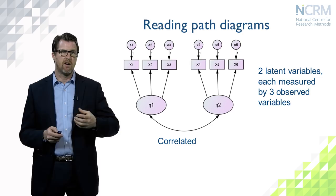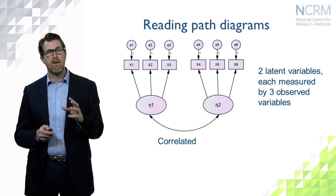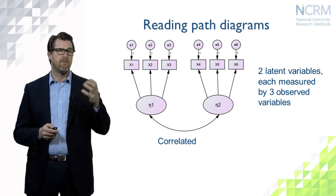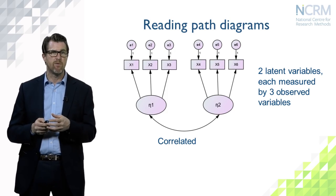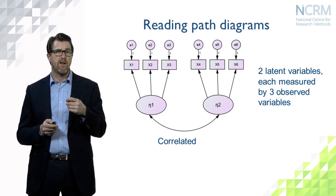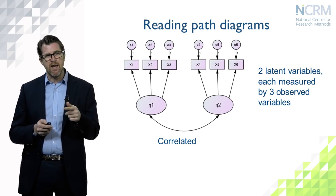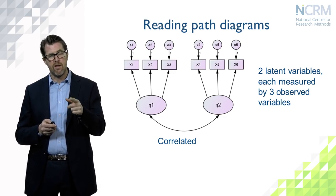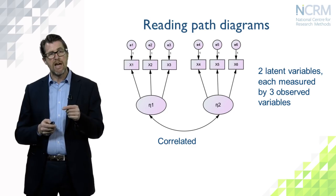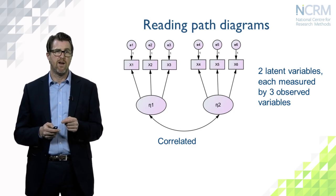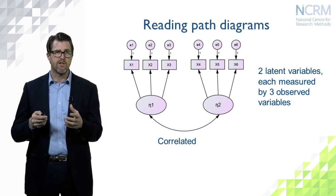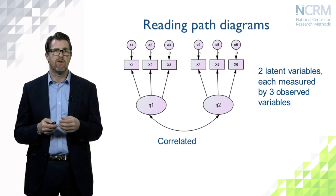We can extend this to a slightly more complicated path diagram with two latent variables, eta1 and eta2, essentially two copies of the previous diagram. Now we have six observed variables, each with an error term. We've also added a curved line with an arrow at each end to show that the two latent variables are correlated — we're not specifying the direction of that relationship, just that there is some association between eta1 and eta2.